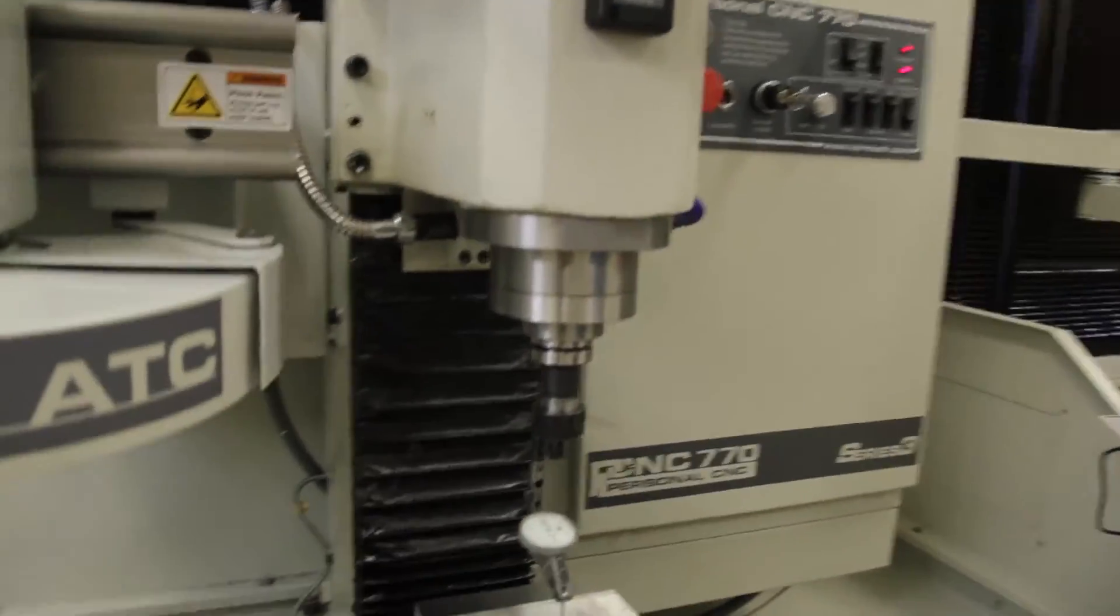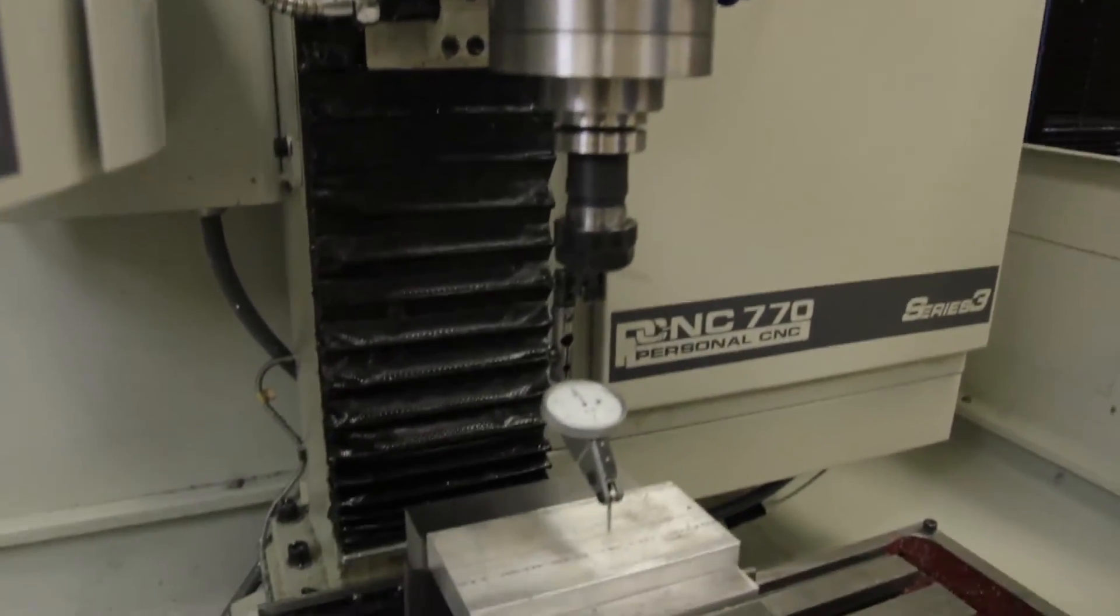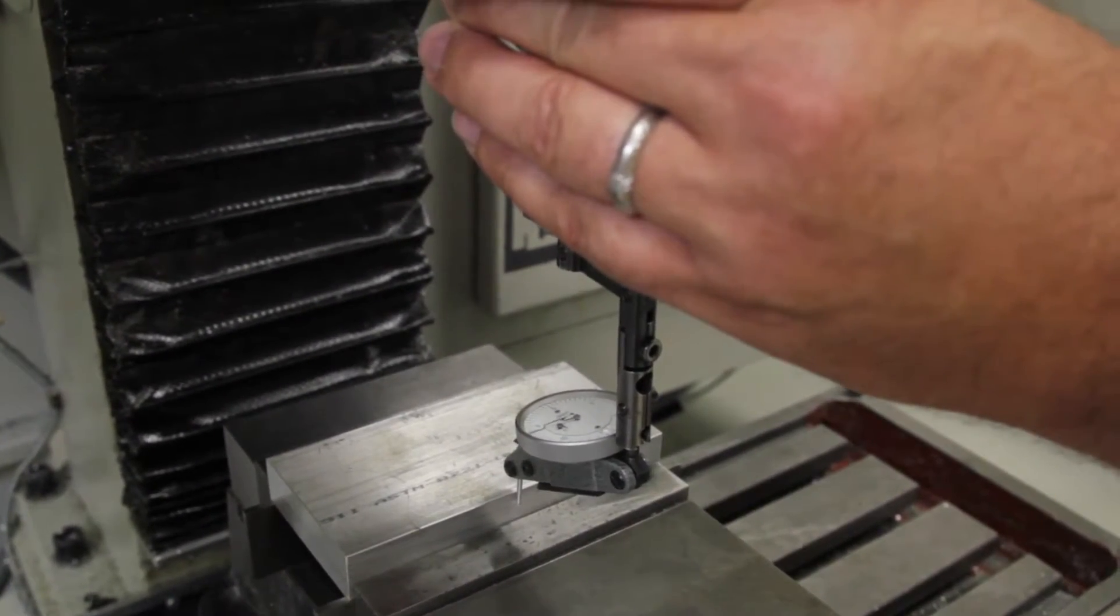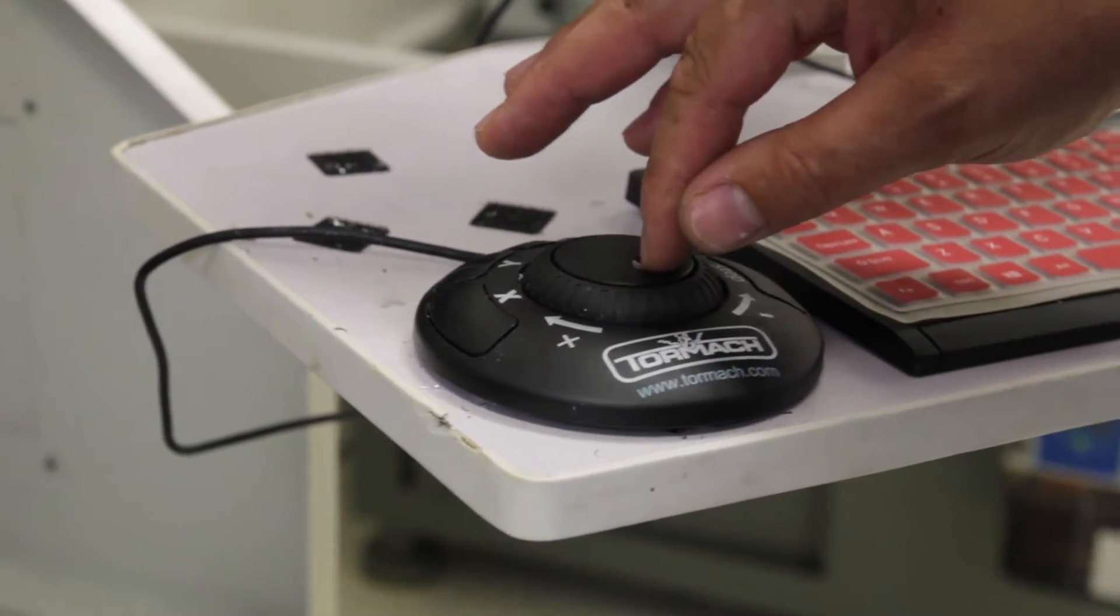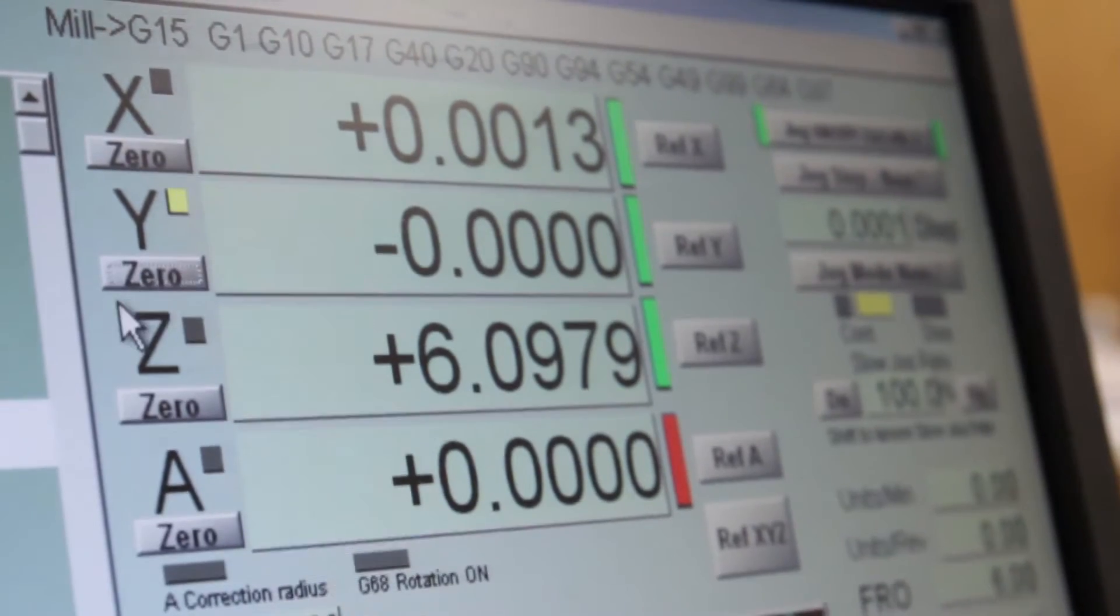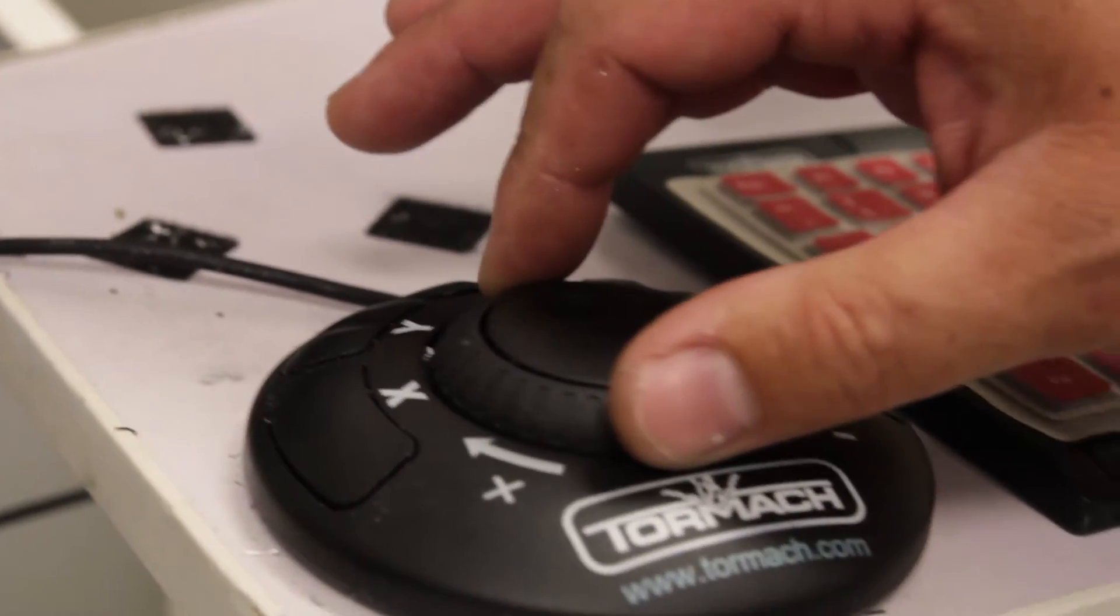Go to zero on the indicator again. Zero my Y readout. Raise my Z.